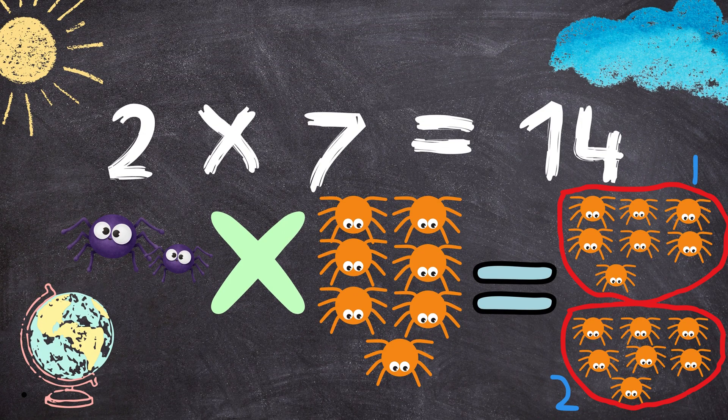Two spiders multiplied by seven spiders will give you one, two, three, four, five, six, seven, eight, nine, ten, eleven, twelve, thirteen, fourteen spiders.